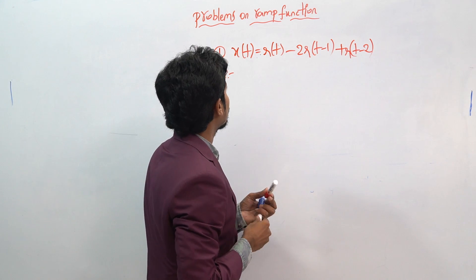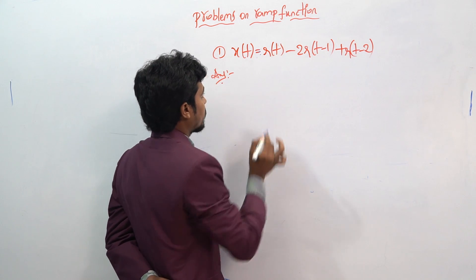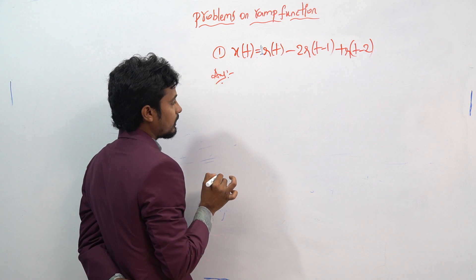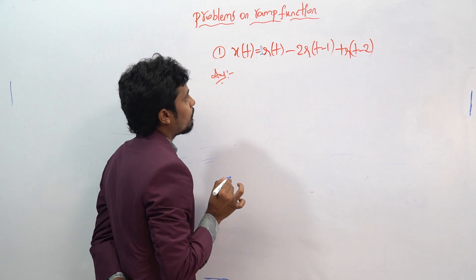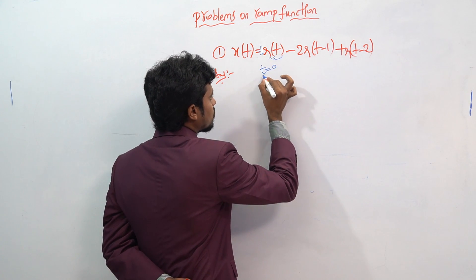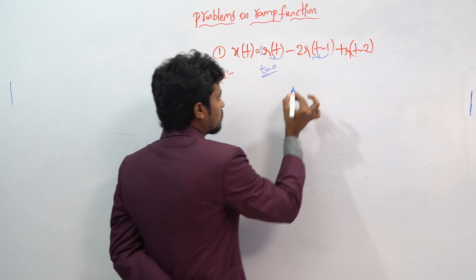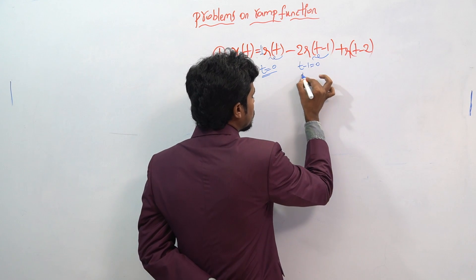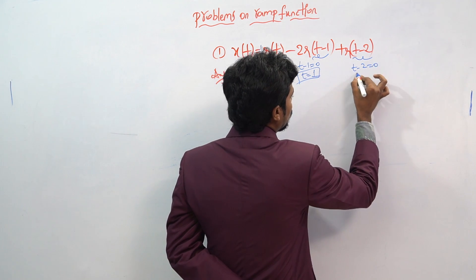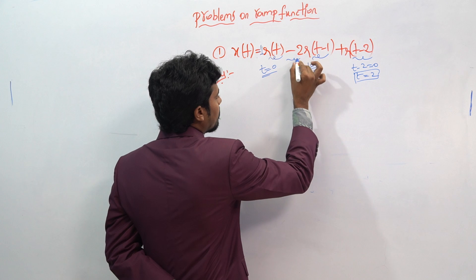This is the question they will ask. No slope is given for any term, so by default we assume slope equal to 1. In this question the plot will start at t equal to 0. Set bracket values to 0: t minus 1 equals 0 gives t equals 1, and t minus 2 equals 0 gives t equals 2. Here the slope will be minus 2.